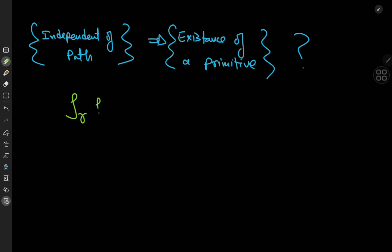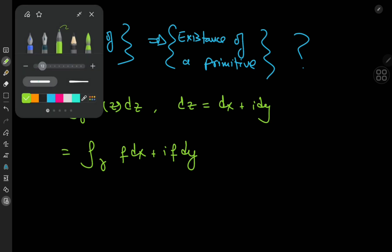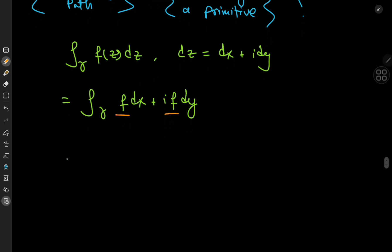The integral over gamma of f(z) dz can be written differently if we expand dz as dx + i dy. So the integral becomes the integral over gamma of f dx + if dy. We have some continuous complex-valued function times dx plus another continuous complex-valued function times dy.